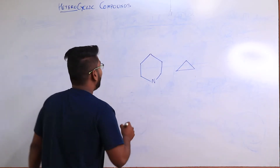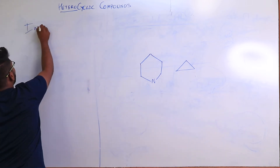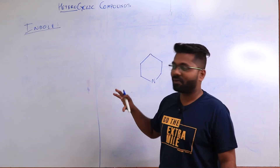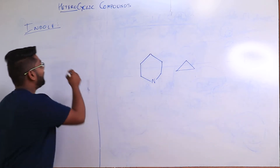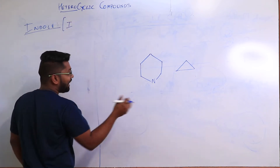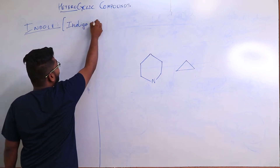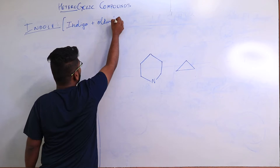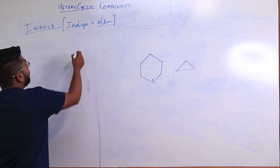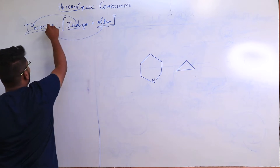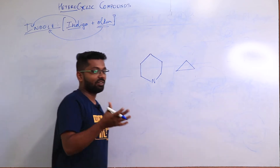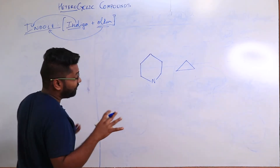The first molecule I want to discuss today is indole. My style — as everybody knows — is to break down the name first. Indole is made up of two constituent reactants: indigo, which is a dye giving color, plus oleum, which is dehydrated H₂SO₄. 'Ind' from indigo and 'ole' from oleum — that is how we get the name indole. It is prepared from these two things and named accordingly.